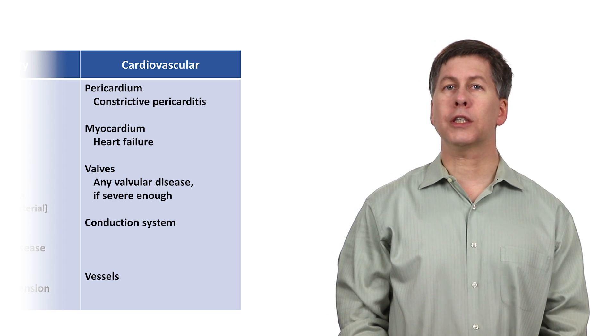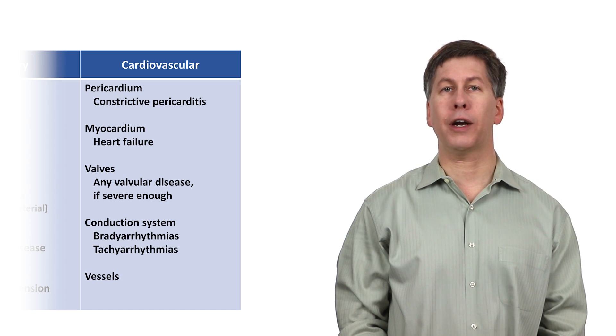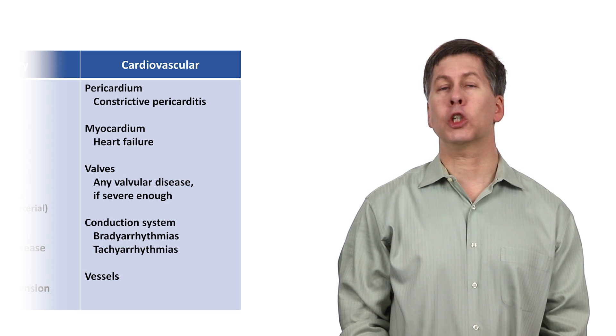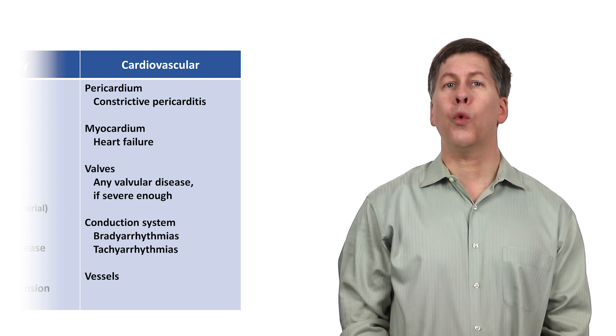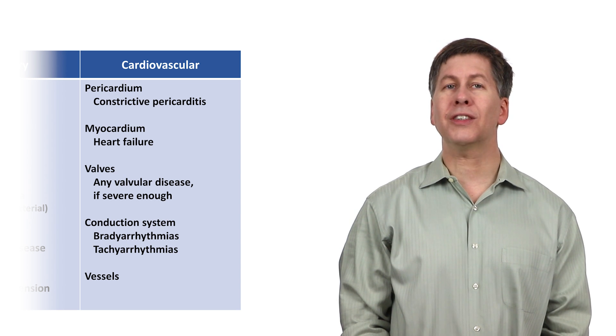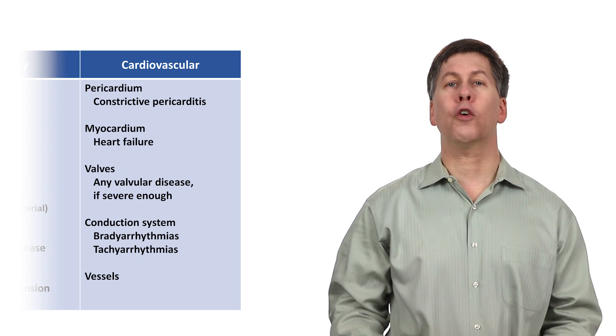With the conduction system, either chronic brady or tachyarrhythmias can lead to chronic dyspnea. The dyspnea in this case could be episodic, as in paroxysmal atrial fibrillation, or it can be constant, as in tachycardia-mediated cardiomyopathy, that can occur in patients who are persistently in any tachyarrhythmia for weeks on end.